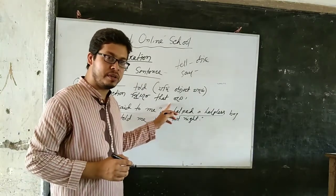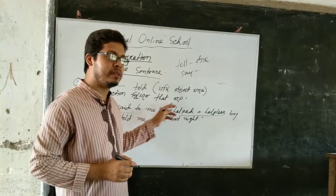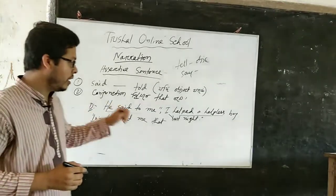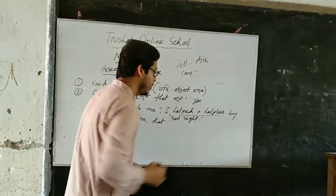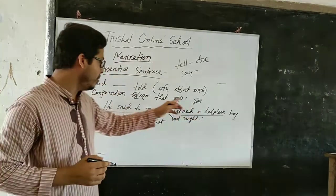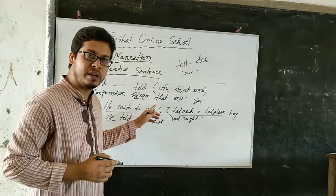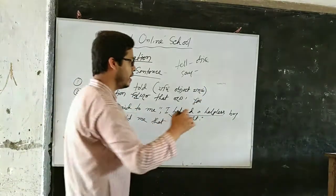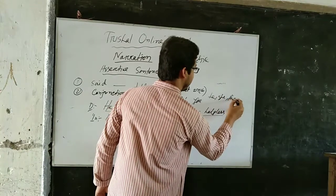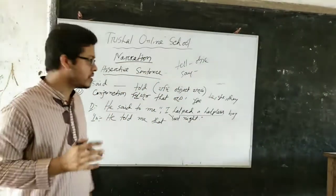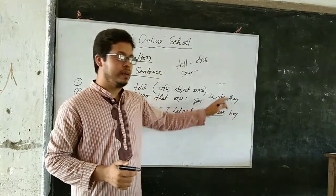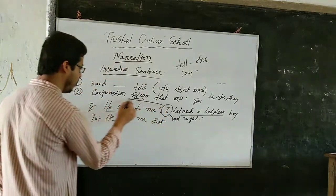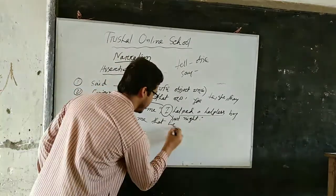First person is changed with the subject of the reporting verb. Second person 'you' is changed according to the object of the reporting verb. Third person — he, she, they — remains unchanged. So here 'I' is first person and goes with 'he.' The subject becomes 'he.'